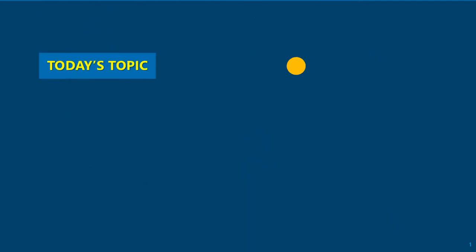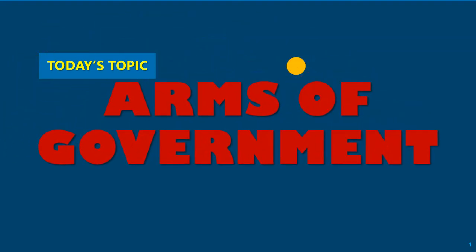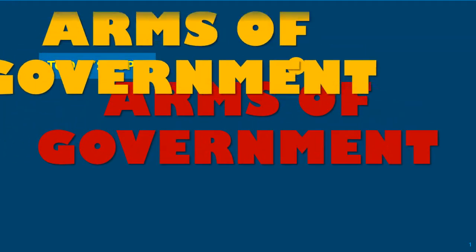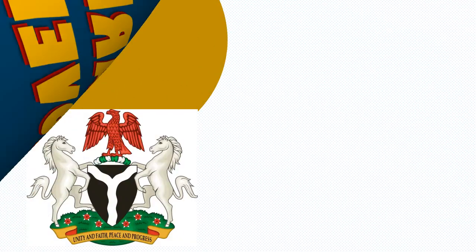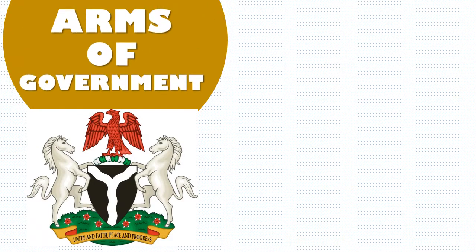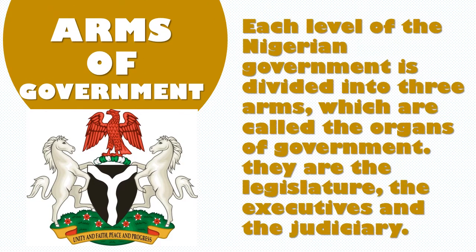Today's class we are going to be looking at arms of government. Every level of the Nigerian government is divided into the organs of government. They are the legislative, the executive, and the judicial.